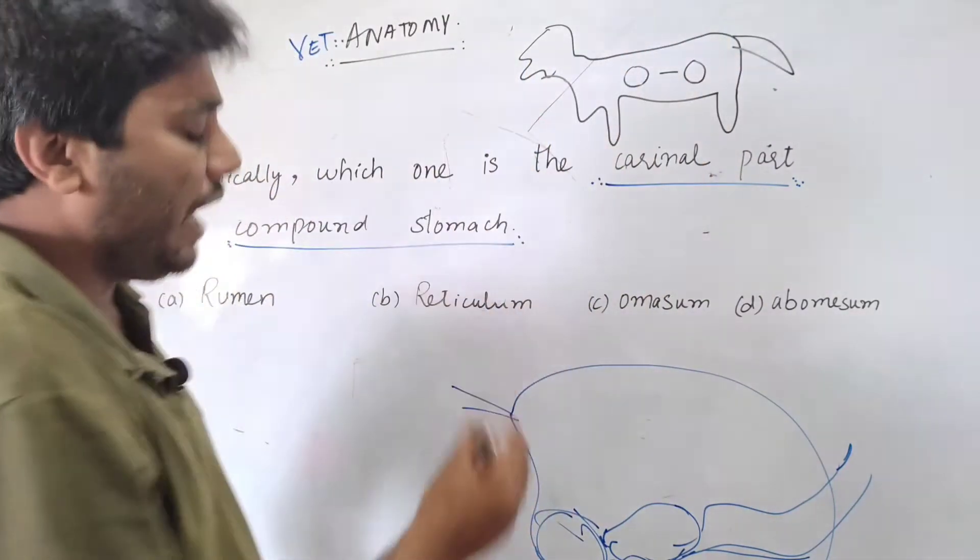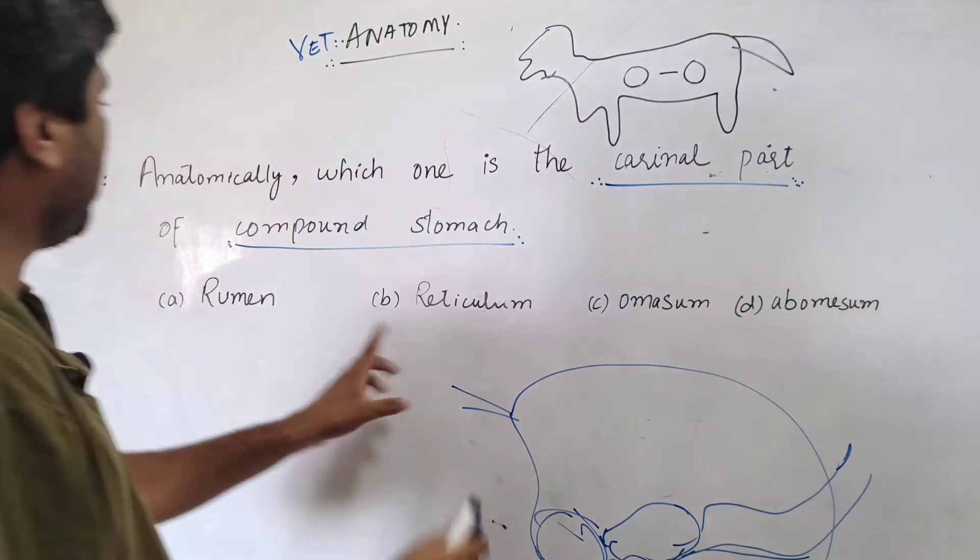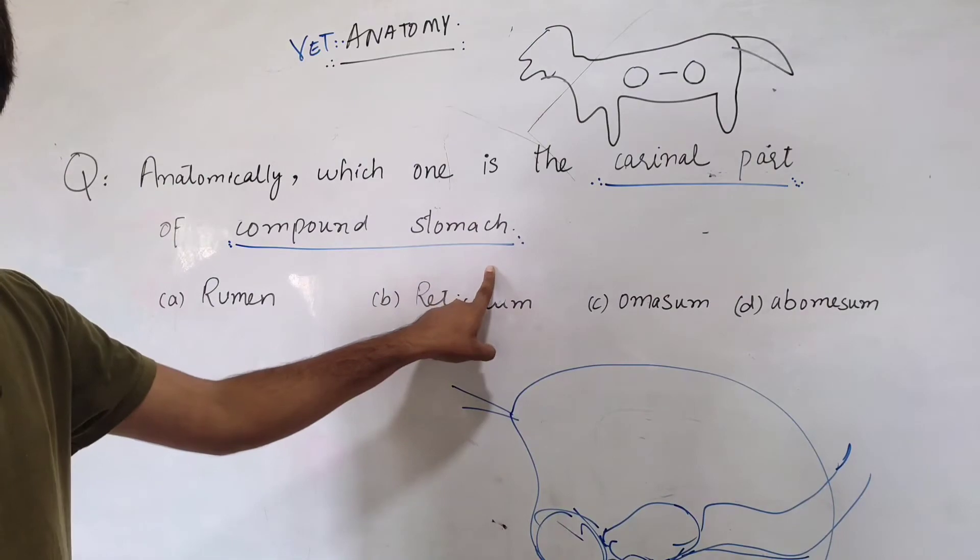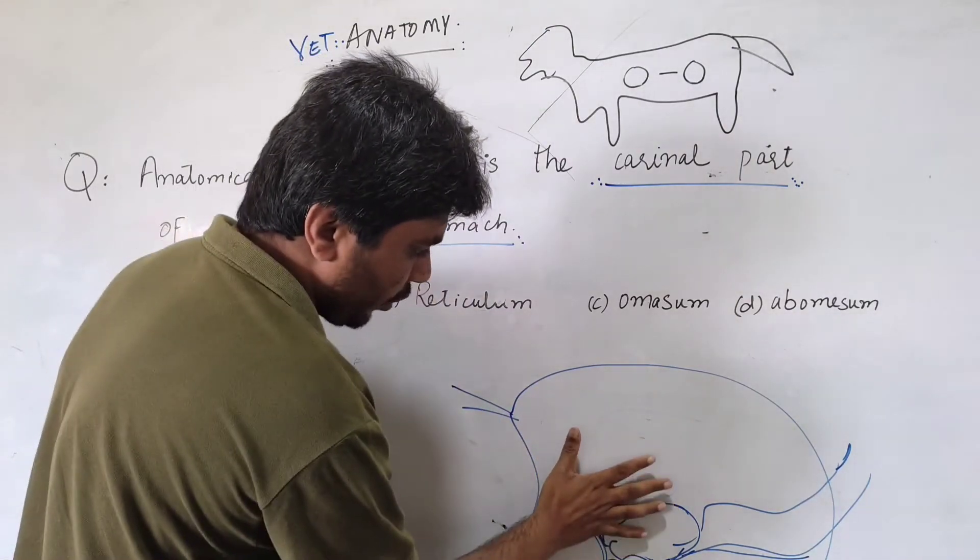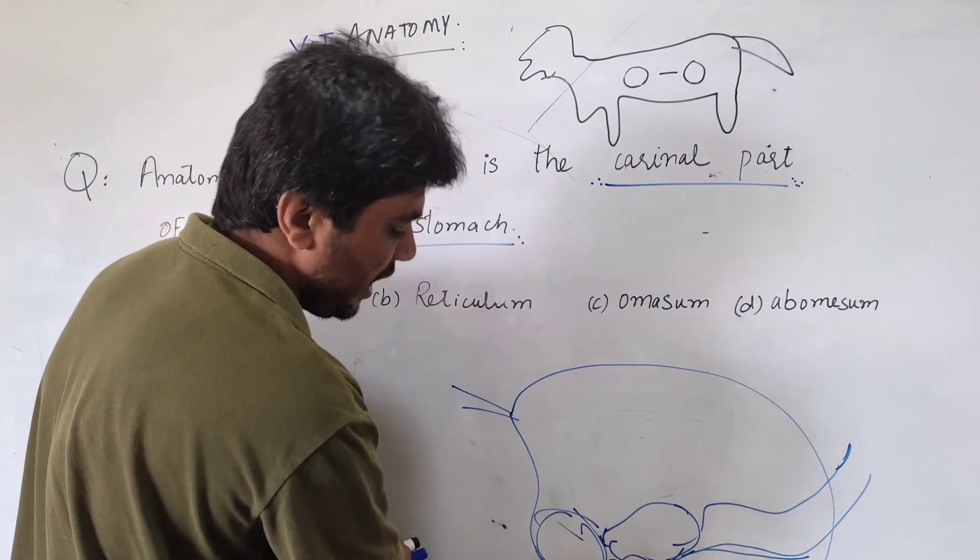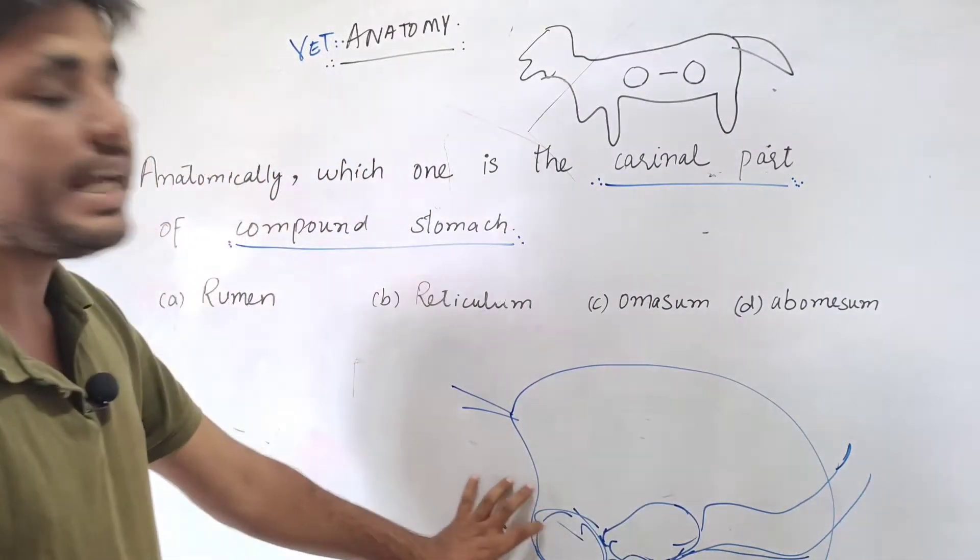So the point is that the question was asking you which is the cranial part of the compound stomach. So if this is the location of this organ, compound stomach, in the cattle or cow, what really happened?